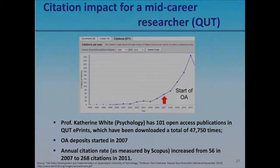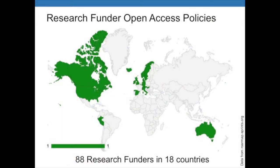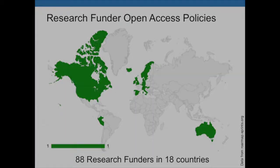Research funders have also put similar policies in place, requiring that research they fund be made freely available. This is a map of 18 countries with at least one public research funder that has such a policy, and there are now around 90 of these policies in existence around the world.